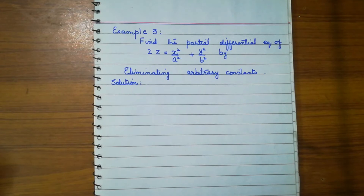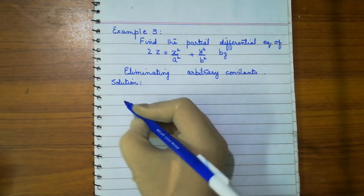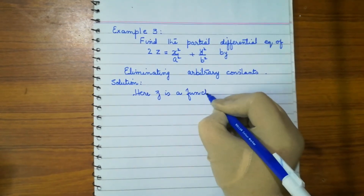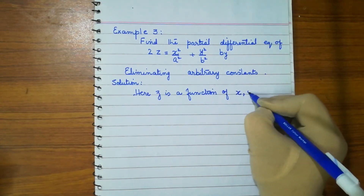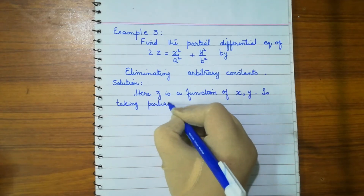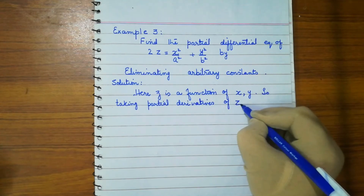We will find the partial differential equation of 2z = x²/a² + y²/b² by eliminating arbitrary constants. Here x and y are the variables and a and b are constants we have to eliminate. Since z is a function of x and y, we take partial derivatives of z.